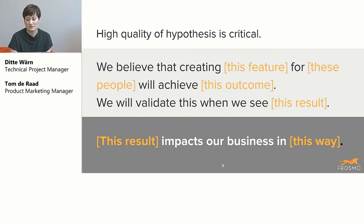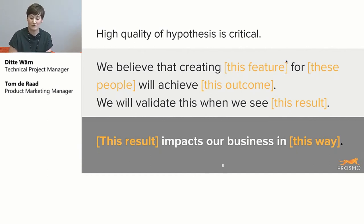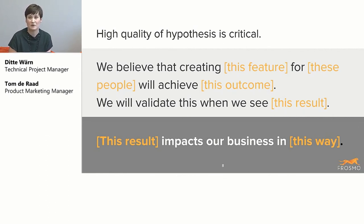Here's a simple example of how this could sound: 'We believe that creating a discount badge for visitors who visit the category page will achieve a higher number of conversions. We will validate this when we see conversions increase by 7%.' From there, we add: 'This result impacts our business by increasing sales by 4%.'